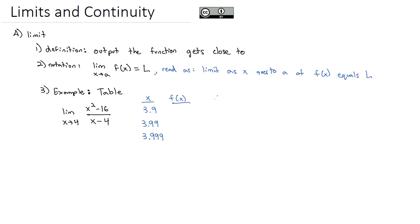And we don't have to just come in from the left side, we can also come in from the right side as well. 4.1 is close to 4, but 4.01 is even closer and 4.001 is even closer, so what's the function doing at each of those points?